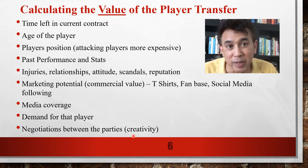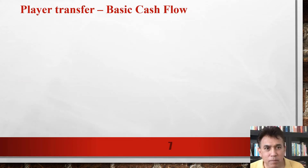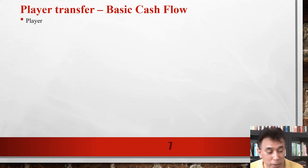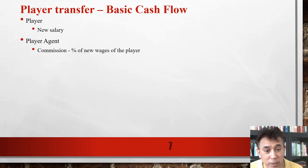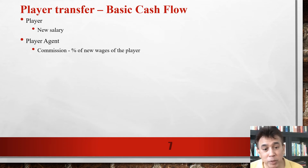Let's look at some basic cash flows involved in a player transfer — there's quite a bit of money involved. The player, by moving to his new club, is entitled to his new salary. The player's agent gets a commission, which is normally a percentage of the new wages of the player over the agreed term. In my previous video on player agents, we spoke about the commissions normally charged by agents, which can be anything from 4% to 10% of the player's wages.